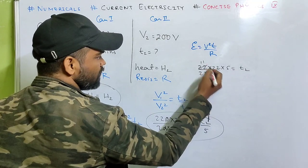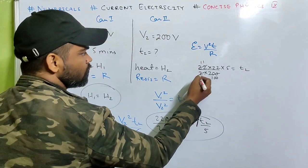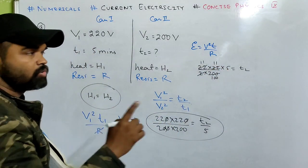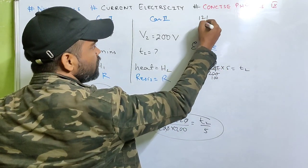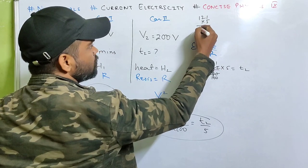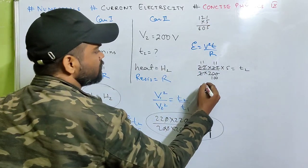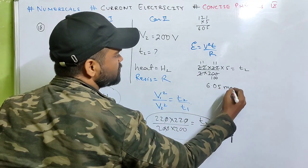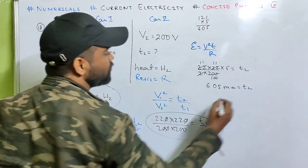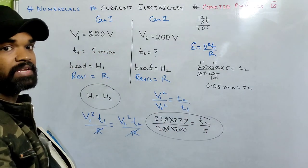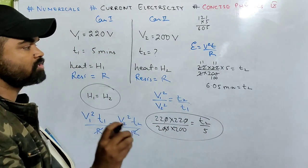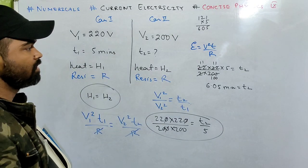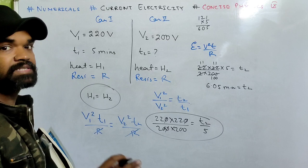Simplifying: 11 times 11 into 5... it's 605 by 100, which means 6.05 minutes. That is your T2. Very easy - just use this notation and you'll get the answer.